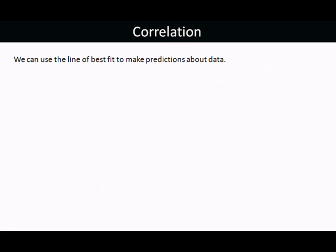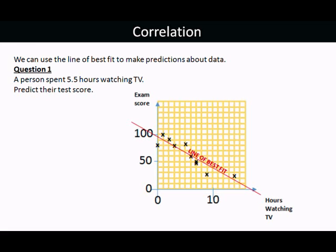You can use the line of best fit to make predictions about data. For example, it's the people watching TV again. We've got somebody who spent five and a half hours watching TV. And we have to predict their test score. There's our graph of hours watching TV and exam scores, and the line of best fit that we drew on it.